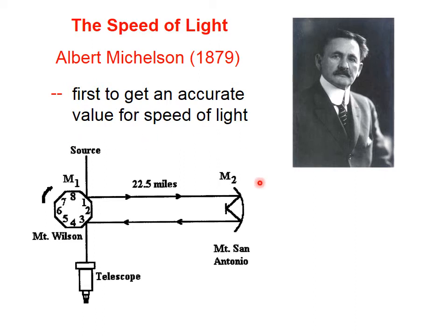This is a top-down view of Michelson's apparatus. This structure here had eight mirrors on it and could be made to spin. There was a curved mirror some 22 miles away on Mount San Antonio, and then there was a plane mirror right here. The source of light would be made to hit this mirror, hit that curved mirror, hit the plane mirror, hit the curved mirror again, come back here, and then could be viewed by a person looking through the telescope.